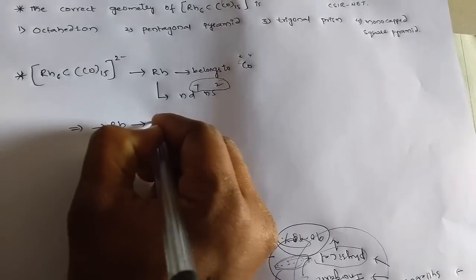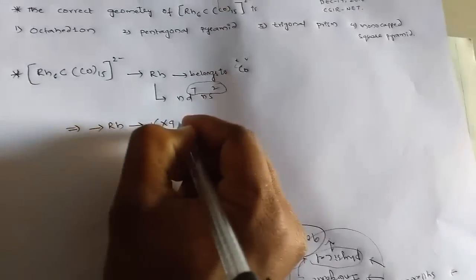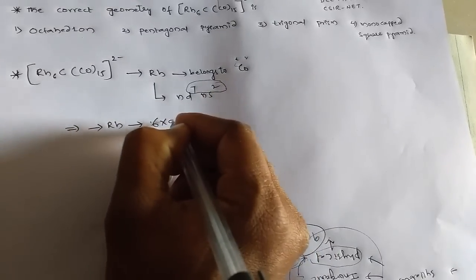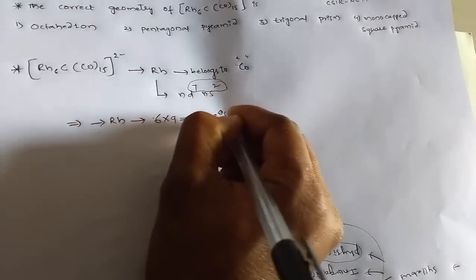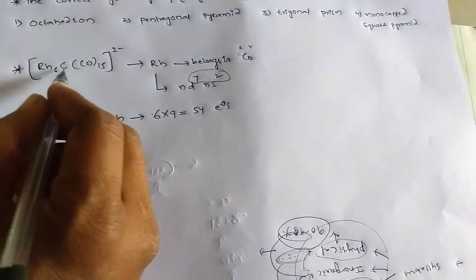So we have six into nine valence electrons, so totally 54 electrons.